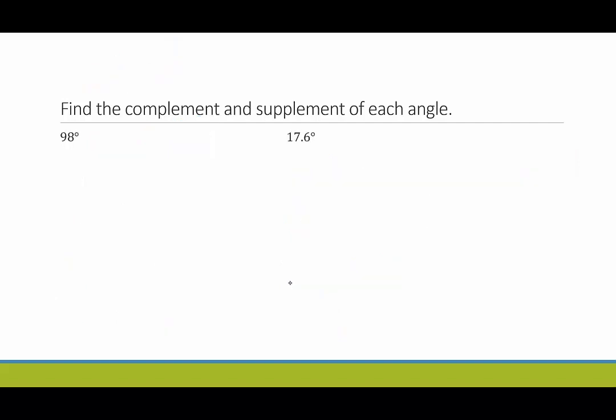Two more examples. We want to find the complement and supplement of each angle. Now we're in degrees. So remember for complement, we're adding up to 90 degrees. And for supplement, they need to add up to 180 degrees. So we have 98 degrees. The complement here, wait a minute. What's going to add up with 98 to make 90? That's going to be something negative, right? It would be 98 plus, and then I need a negative 8 to equal 90 degrees. But remember what I said earlier on, that the angles have to have positive measures.